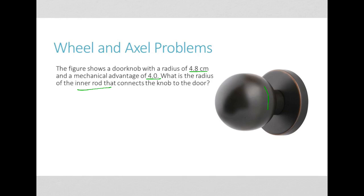So we're going to assume that the larger doorknob is basically our wheel here, and that the rod on the inside is going to be our axle. And so we know that the IMA of a wheel and axle is going to be the radius of the wheel divided by the radius of the axle.